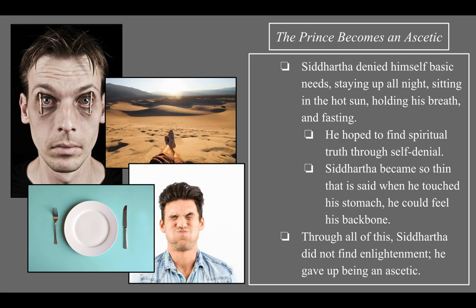As an ascetic, Siddhartha denied himself basic needs: he kept himself up all night without sleeping, sat in the hot sun for long periods without shelter, held his breath for several minutes at a time, and fasted — going days without eating. He hoped to find spiritual truth through these forms of self-denial. It is said he became so thin that when he touched his stomach he could feel his backbone. But unfortunately, through all of this, Siddhartha did not find enlightenment and was just really unhappy, so he gave up being an ascetic.